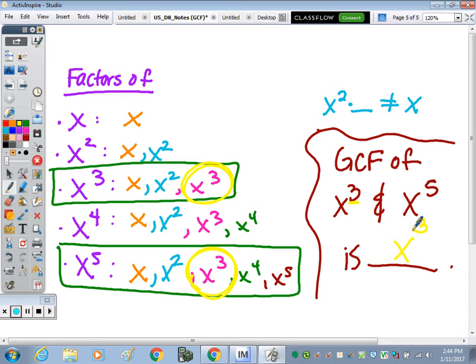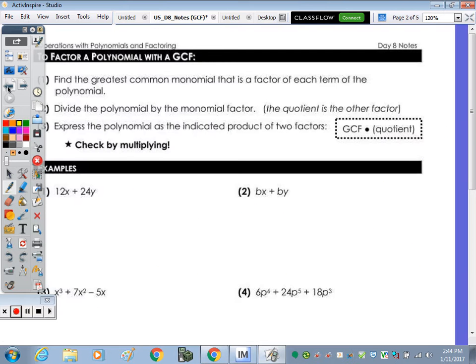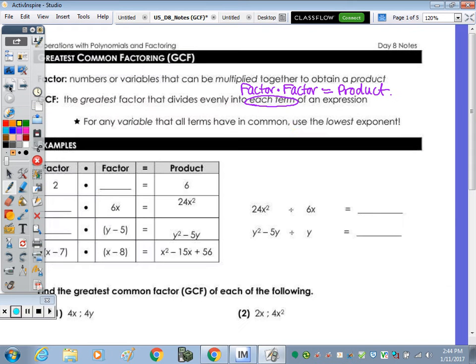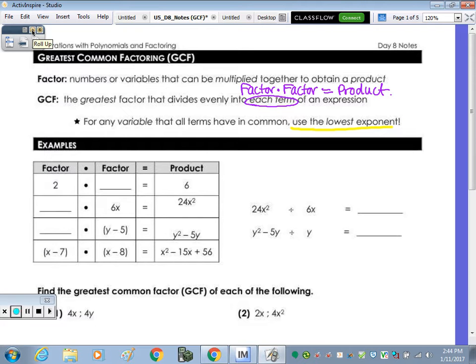So back to the note page. I just want to explain why we use the lowest exponent. So take a minute to fill in the table. It's pretty basic. What do we multiply 2 by to get 6? 6x times what is 24x squared? Dan, what's the first row? 2 times what is 6? 3.